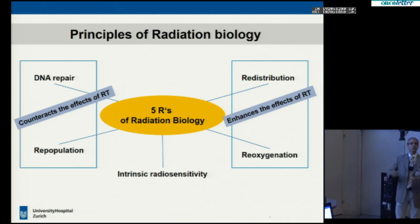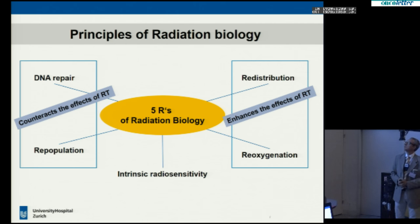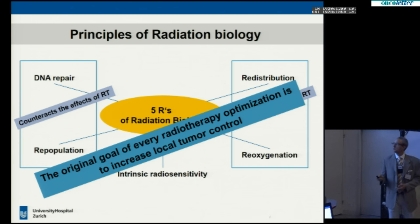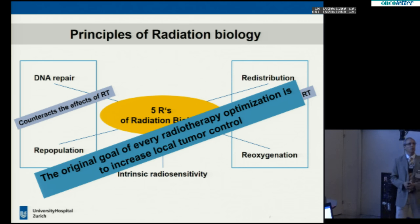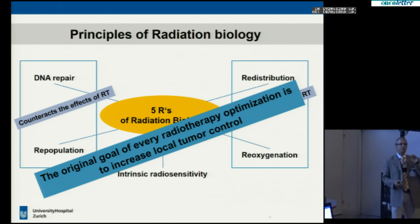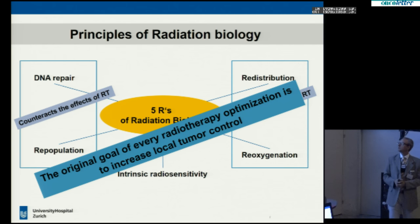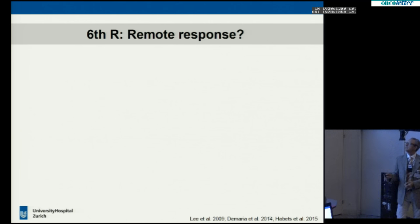That's one of the reasons why we do fractionated treatment in most tumors, primarily in the definitive and curative setting. But with increasing knowledge in immunotherapy, maybe we have to consider additional R's, because with these original R's the goal of radiotherapy is always to increase local tumor control by specifically interacting directly with the tumor cells. Maybe we need to consider a sixth R.